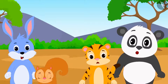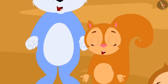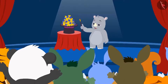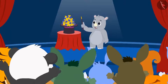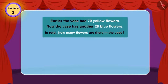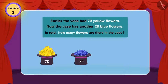Everyone was surprised how Gaggu did this magic. They clapped really, really hard. In the flower vase earlier, there were 70 yellow flowers. Now, in the flower vase, there are 28 flowers more.